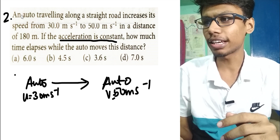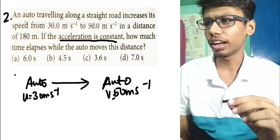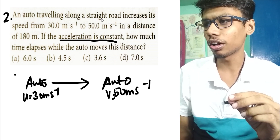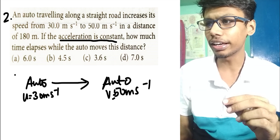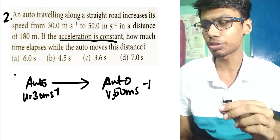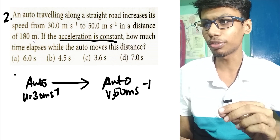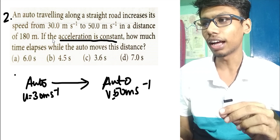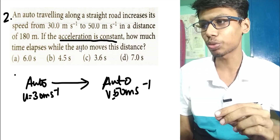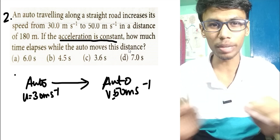In the second problem: an auto traveling along a straight road increases its speed from 30 ms⁻¹ to 50 ms⁻¹ in a distance of 180 meters, with acceleration constant. Find the time elapsed while the auto moves this distance.